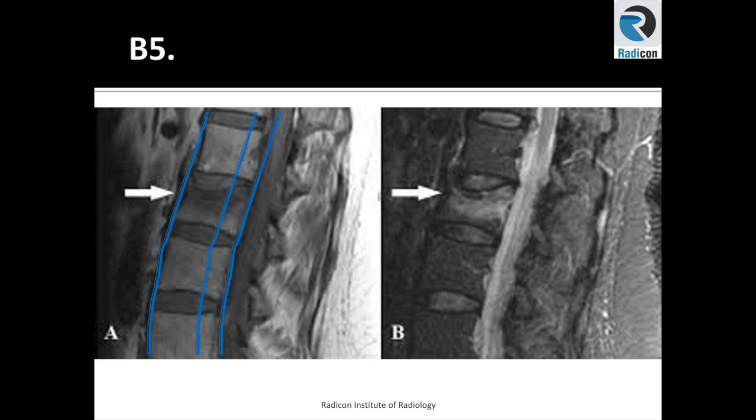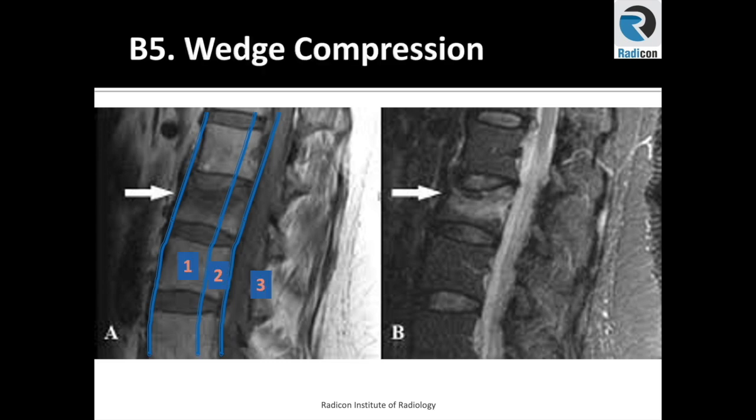If there is a fracture present, it is our job to identify a single column wedge compression fracture from a double column burst fracture. Involvement of two columns or more than 50% reduction of vertebral body height has a high risk for collapse and should be fixed.